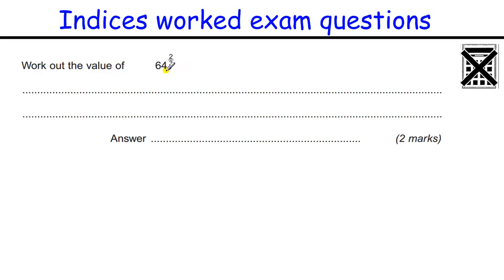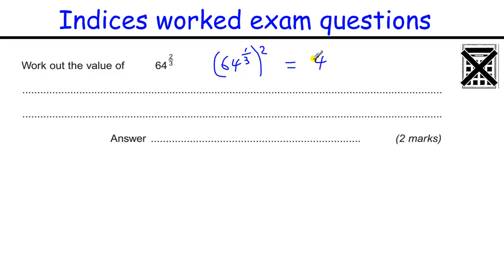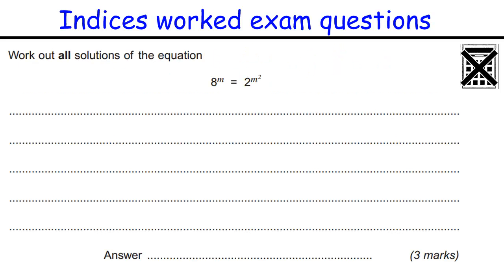64 to the power of two-thirds — a very common high-level question. Break the power into two parts: 64 to the two-thirds is 64 to the one-third, and then that squared. When combining powers of powers you multiply them: one-third times 2 gives two-thirds. So take the cube root of 64, which is 4, then square it to get 16. Usually we do the root before the power.